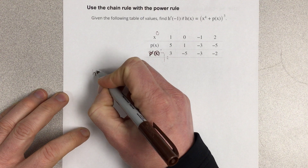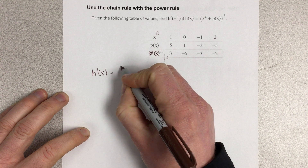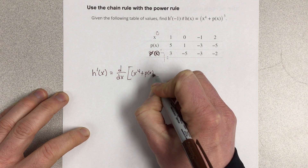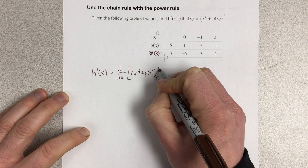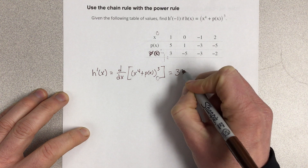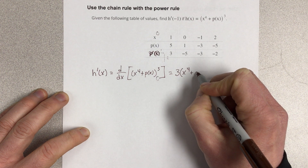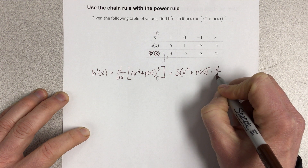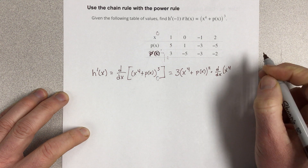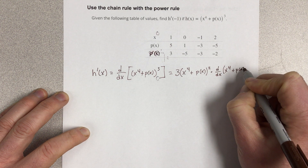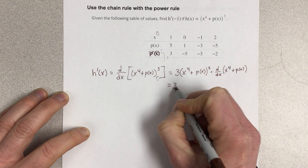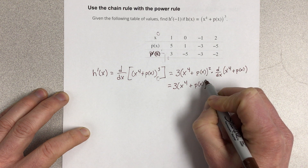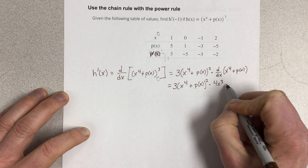So let's start by using the chain rule on that. h prime of x is going to equal the derivative of x to the 4th plus p of x, to the 3rd power, which is equal to 3 times x to the 4th plus p of x, to the 2nd power, times the derivative of the inside, which would be x to the 4th plus p of x. So we end up with 3 times x to the 4th plus p of x, squared, times 4x cubed plus p prime of x.